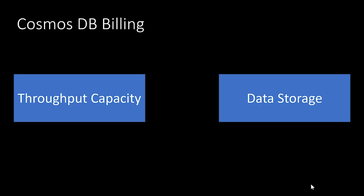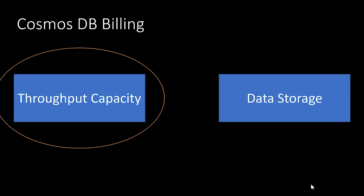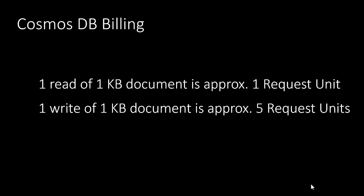Let's do a quick refresher on how Cosmos DB billing works. Your Cosmos DB bill can be separated into two broad categories: throughput capacity and data storage. Let's talk about throughput capacity, which is obviously where the bulk of your bill will come from. Throughput capacity is measured in something called request units. Request units are incredibly easy to scale up and down — they're billed on an hourly level, so you can scale for workloads that may have certain peaks or use high numbers of request units at different times. To give a rough idea of what a request unit is: one read of a one kilobyte document will use approximately one request unit, and one write of a one kilobyte document will use approximately five request units.